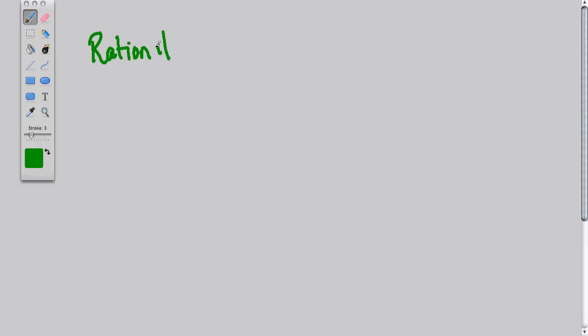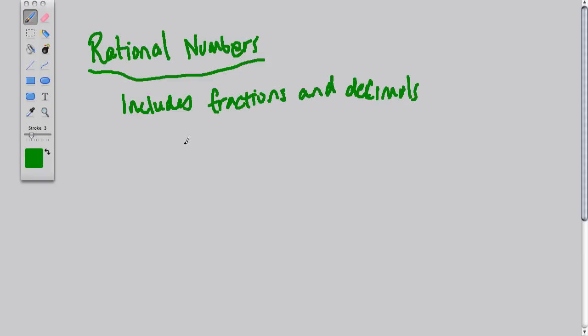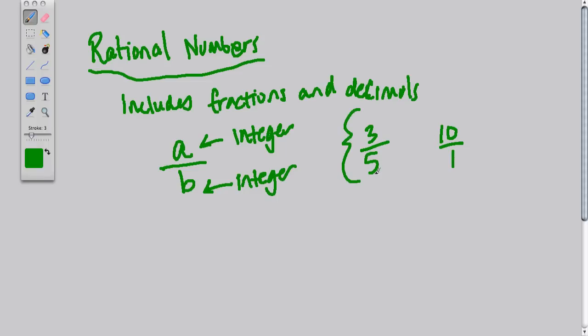So let's say we have rational numbers. This includes all the types of numbers we've seen already. It includes counting numbers, whole numbers, and integers. And it also includes fractions and decimals. So what we define a rational number, we say, let's say you take one integer and put it over another, and a is an integer, and b is an integer. If you do this, you're writing a rational number. So 3 over 5, that's rational. The number 10, that's rational because it's 10 over 1. Anything that can be written as a fraction is a rational number.